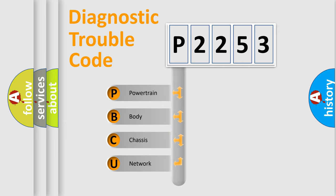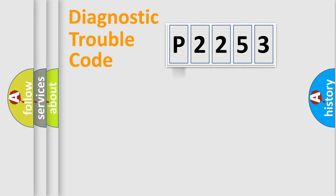We divide the electrical system of the automobile into four basic units: powertrain, body, chassis, and network. This distribution is defined in the first character code.